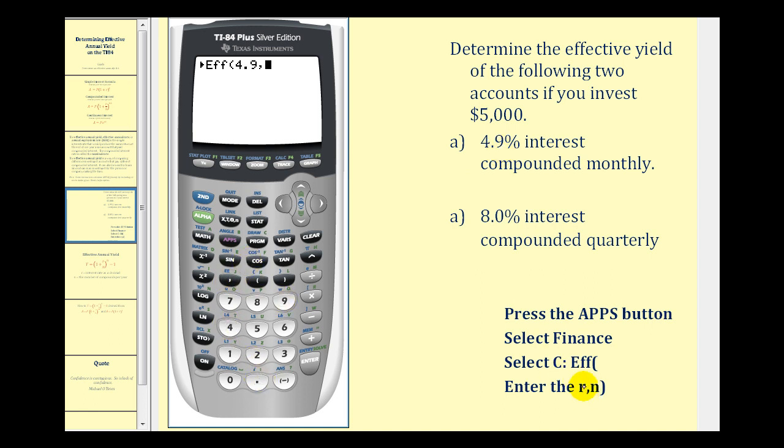comma, and then N which is the number of compounds per year. Since it's monthly and there's 12 months in one year, N is 12. Press enter. Our effective annual yield will be approximately 5.01 percent.